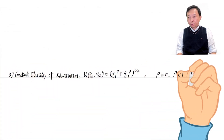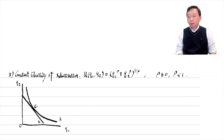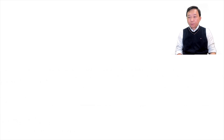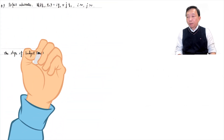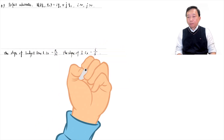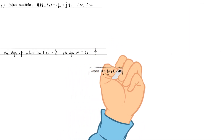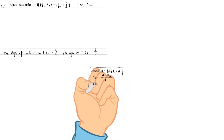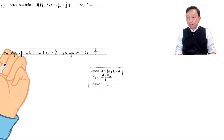The third case of the constant elasticity of substitution utility function also gives an interior solution for the optimal bundle. It is on the indifference curve that is tangent to the budget line. The fourth case is perfect substitutes. The indifference curves are straight lines. The slope of the indifference curve is minus I over J. The slope of the budget line is minus P1 over P2. We compare the slopes of the indifference curve and the budget constraint to find the optimal consumption bundle.